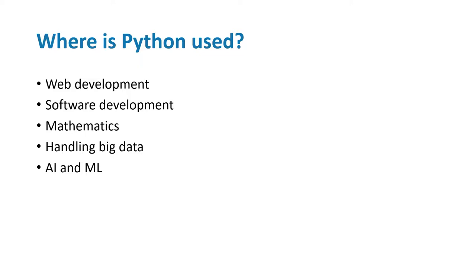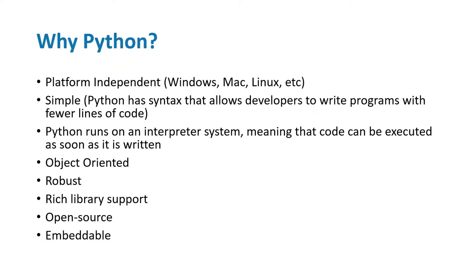Moving on - why Python? Why do we need to choose Python over other programming languages? One main reason is it is platform independent - you can use it on any operating system like Windows, Mac, Linux, etc. The second reason is simplicity. Python has a syntax which allows developers to write programs in fewer lines of code. For example, seven to eight lines of code in Java can easily be written in three to four lines in Python.